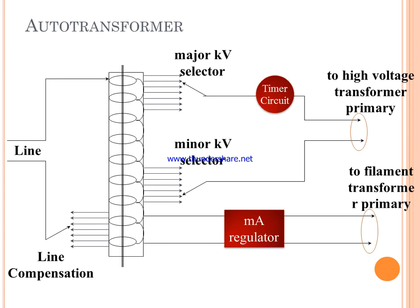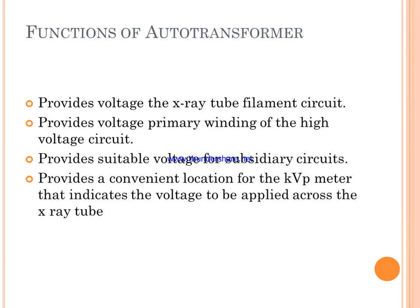The auto transformer functions as both a step-up and step-down transformer. Here is an image of the auto transformer showing line compensation, a major kVp selector, and a major/minor kVp selector, which connect to a timer circuit and high voltage transformer primary.